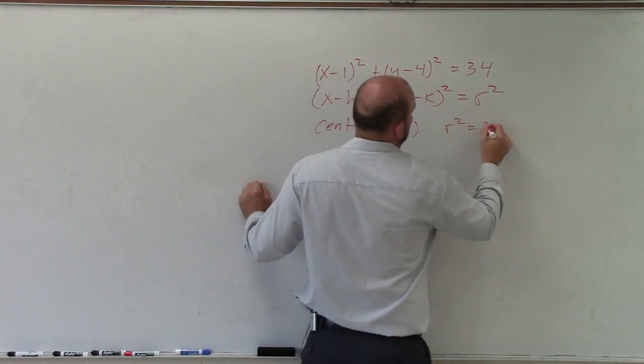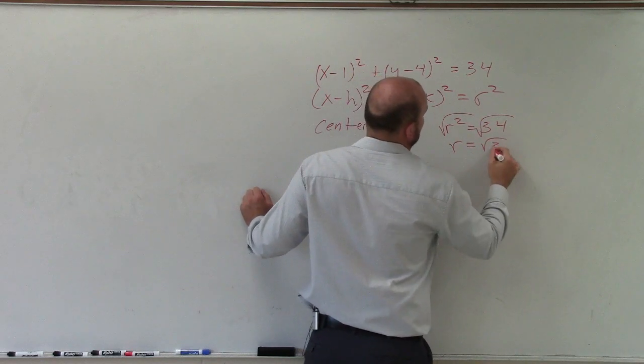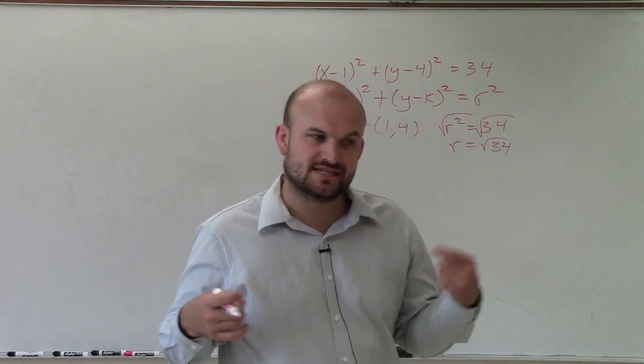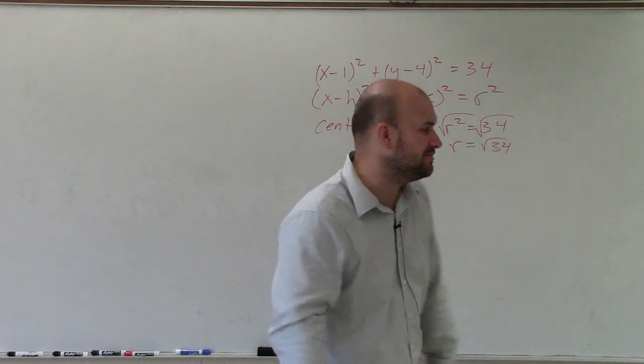And r² equals 34, so I take the square root. r equals √34. Now √34 is going to be a decimal between 5 and 6, because 5² is 25 and 6² is 36, so it's somewhere in between there.